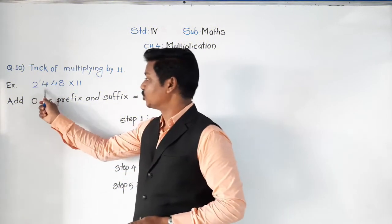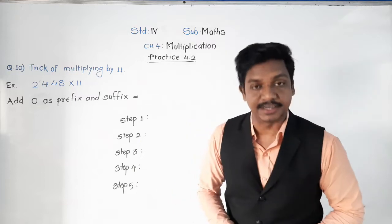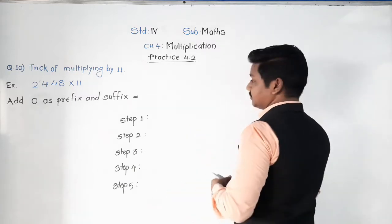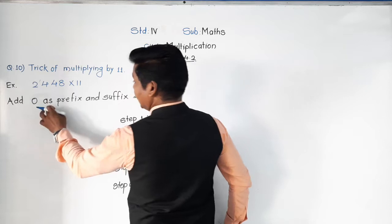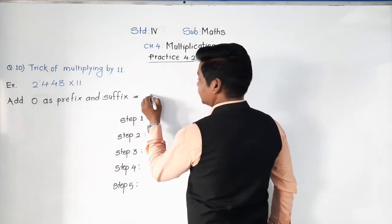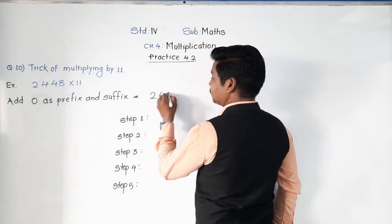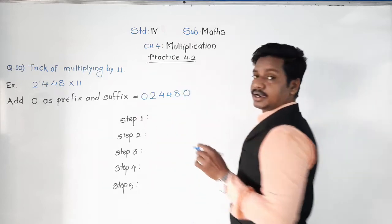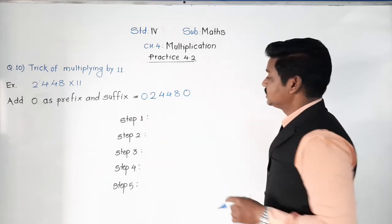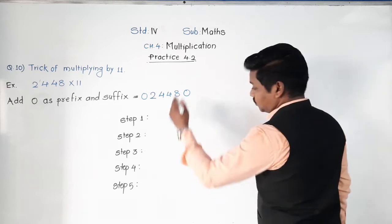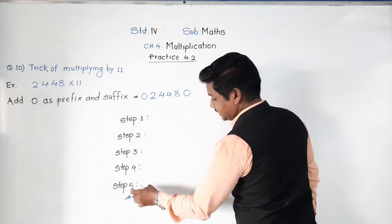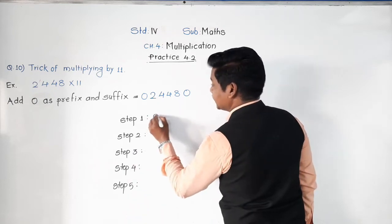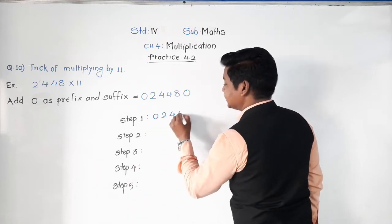The next example is 2448 into 11. As we did before, the first step is to add zero as prefix and suffix. So write 2448 and add zero before and at the end, making it 024480. This number has now become a six-digit number. Write this number as it is below.